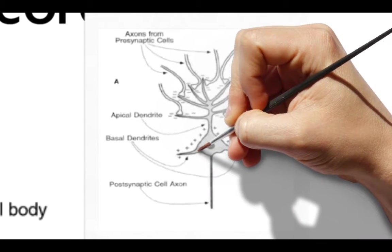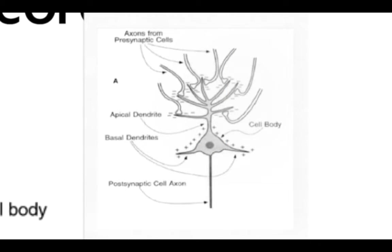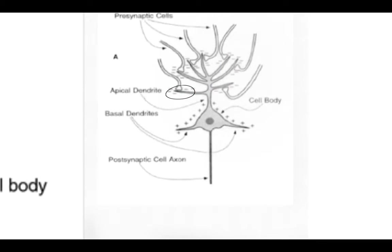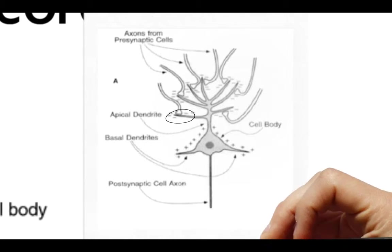When the dendrites of a neuron receive neurotransmitters from the axons of other neurons, it causes an electrical polarity change inside of the neuron. This polarity change is what the EEG equipment is recording.